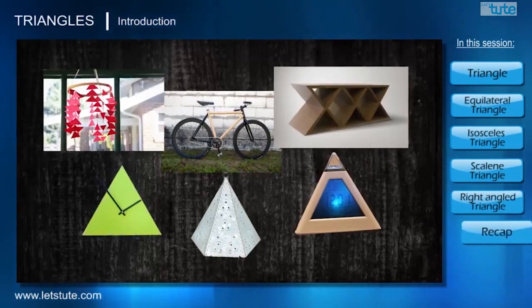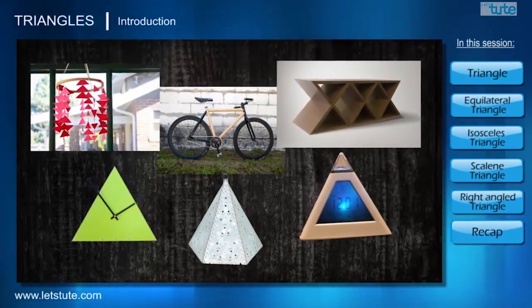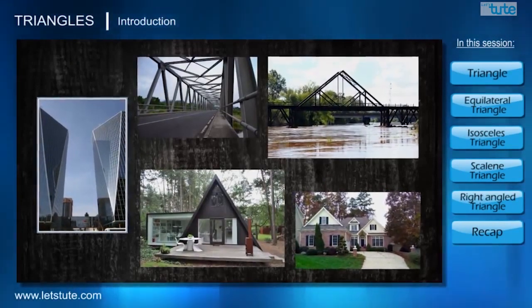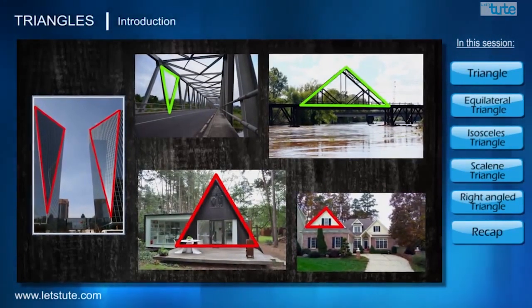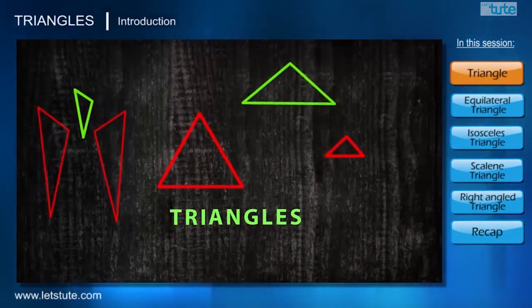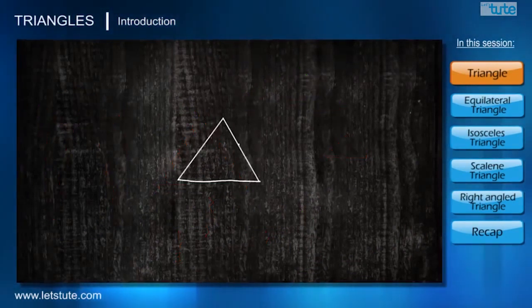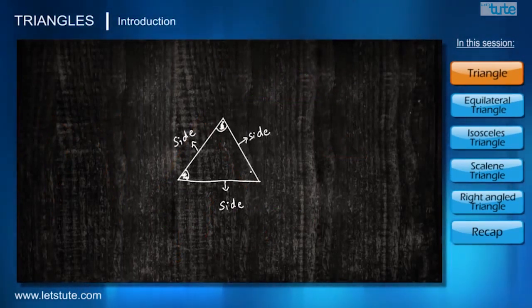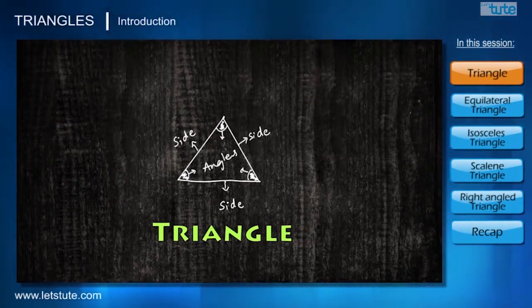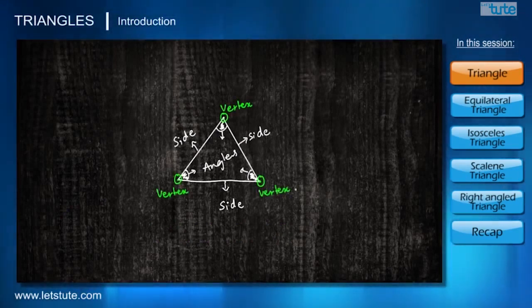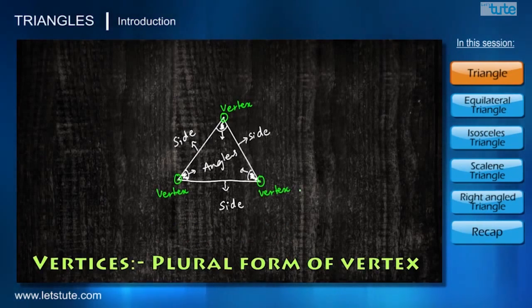If you notice the surroundings, there is one shape which is majorly used by architects and engineers, and most commonly seen in different structures like rooftops and bridges. That shape is a triangle. If we split the name, 'tri' means three and 'angles' means the corners made by two sides. So if a shape has three sides and they form three angles, it is called a triangle. Triangles have three endpoints, and each endpoint is called a vertex; all the endpoints together are called vertices.